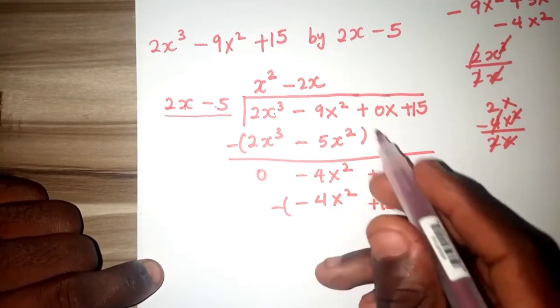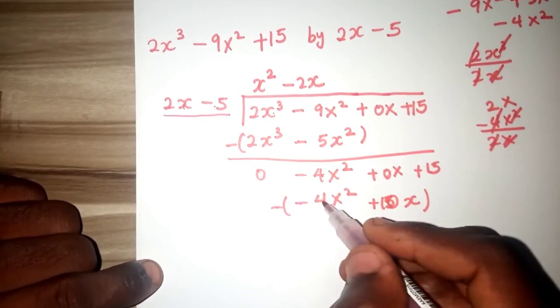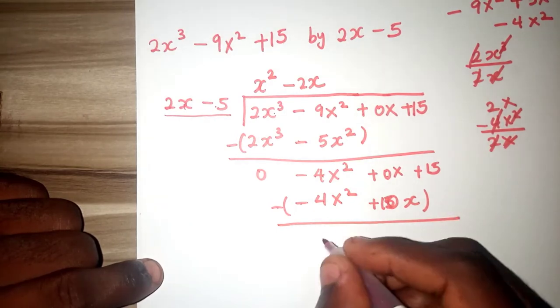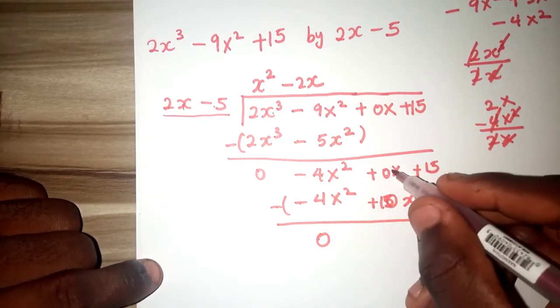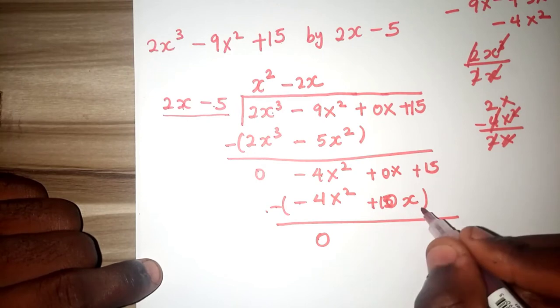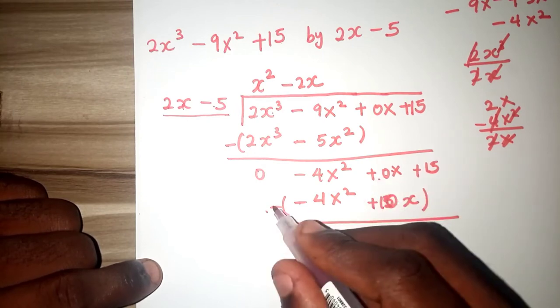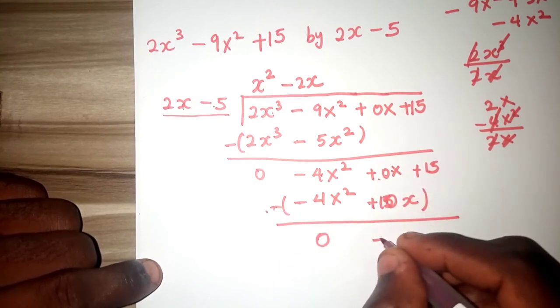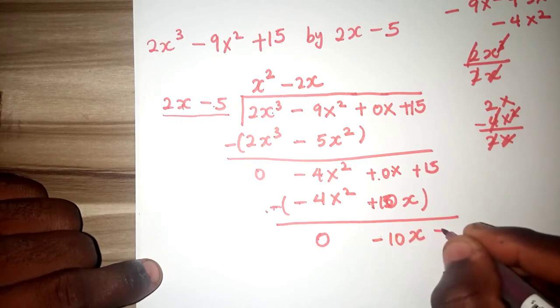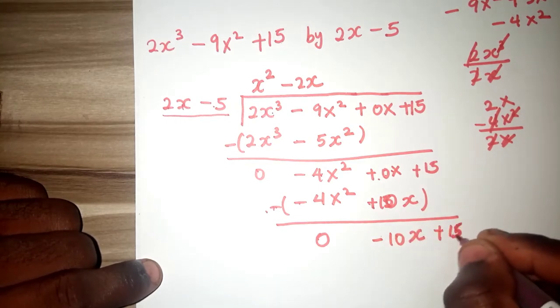So introduce your minus again, 4 minus minus 4, that will give us 0, then is 0 minus plus 10, that will give us minus 10x plus 15.